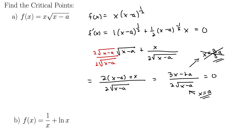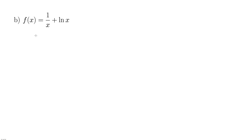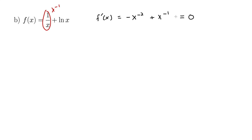On to part b: f of x equals 1 over x plus natural log of x. I'll show both methods here. Taking the derivative: note that 1 over x is x to the negative 1, so f prime of x equals negative x to the negative 2 plus the derivative of natural log x, which is 1 over x, written as x to the negative 1. We want to set this equal to zero and find where it also does not exist.